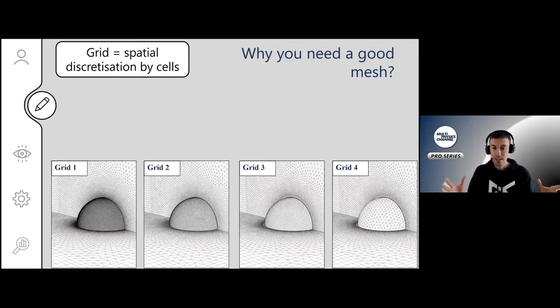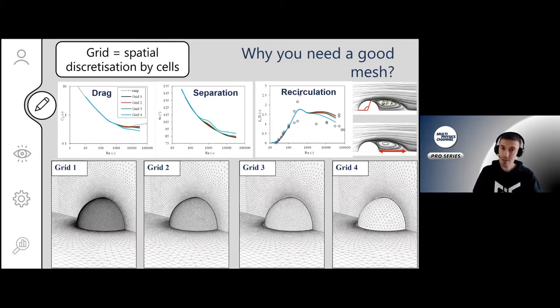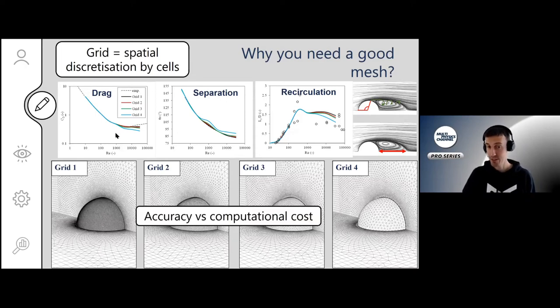Why do you need a good mesh or a good grid? What you see here are four different grids. If you look at the results for flow over a sphere, you see the drag coefficient, separation angle, and recirculation length. The coarsest grid, grid number four, the blue line, differs from the others. It is less accurate and differs from the experimental data. You need a sufficiently fine mesh to have an accurate computational solution.